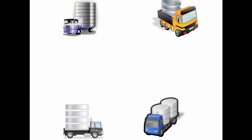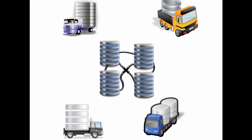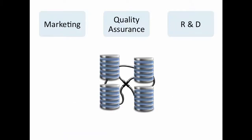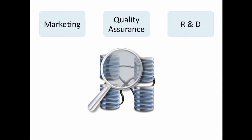Various departments in different branch offices often rather use their own data silos than have one large central knowledge model. Such a central model is not only much harder to manage, but there is also the general problem that different departments like marketing, quality assurance, research and development etc. will have varying views on the model and its concepts.